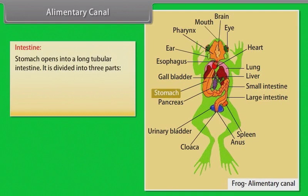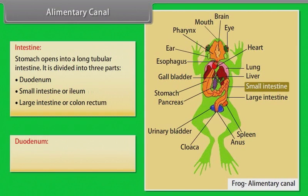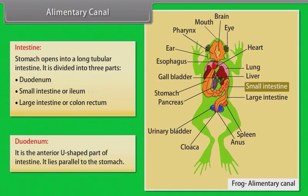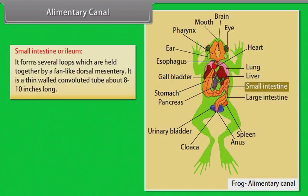Intestine. The stomach opens into a long tubular intestine. It is divided into three parts: duodenum, small intestine or ileum, and large intestine or colon/rectum. The duodenum is the anterior U-shaped part of the intestine and lies parallel to the stomach. The small intestine or ileum forms several loops, which are held together by a fan-like dorsal mesentery. It is a thin-walled convoluted tube about eight to ten inches long.